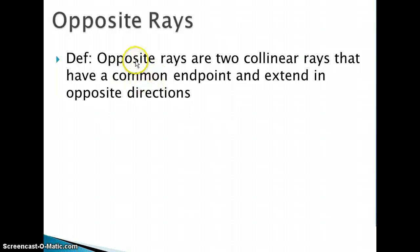The definition is opposite rays are two colinear rays, so that means they're on the same line, that have a common endpoint, the vertex, and extend in opposite directions.